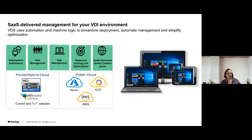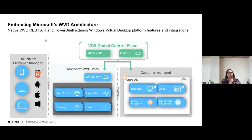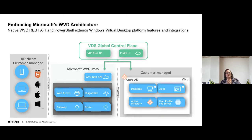If you do have an HCI environment on-premise, it will allow you to manage all of that concurrently through a single pane of glass. With VDS, we truly embrace the WVD architecture. VDS has a global control plane with a REST API as well as a portal UI, and that REST API connects and works directly with native WVD. It allows you to have access to the local control plane providing information on diagnostics and gateways, managing the brokers, and also has the connection to your Active Directory — allowing administrators to manage the desktops, apps, Active Directory, user profiles, and everything else all from that single pane of glass.